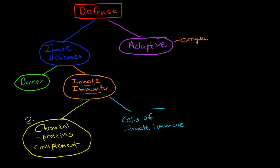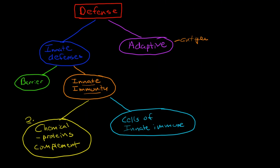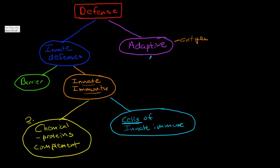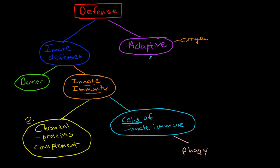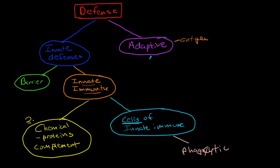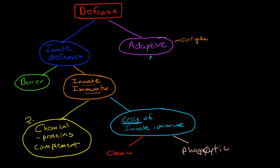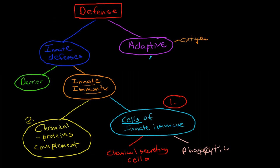There are two broad classes of cells in the innate immune system: phagocytic cells and chemical-secreting cells. We are going to talk about the cells of the innate immune system first, and then we will go on to talk about the chemical element of the innate immune system.